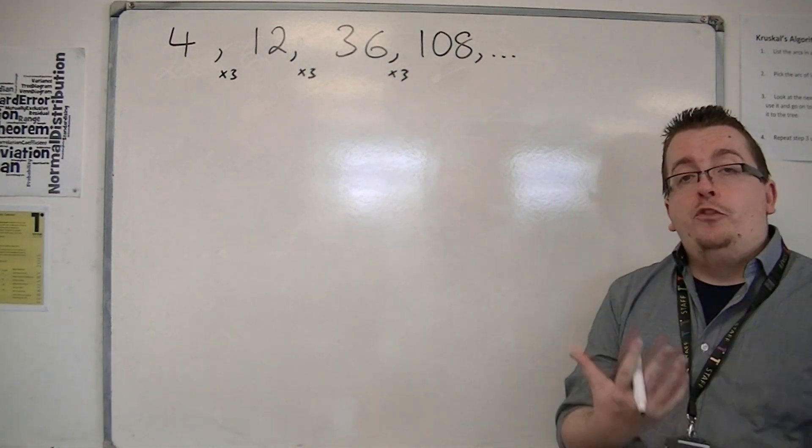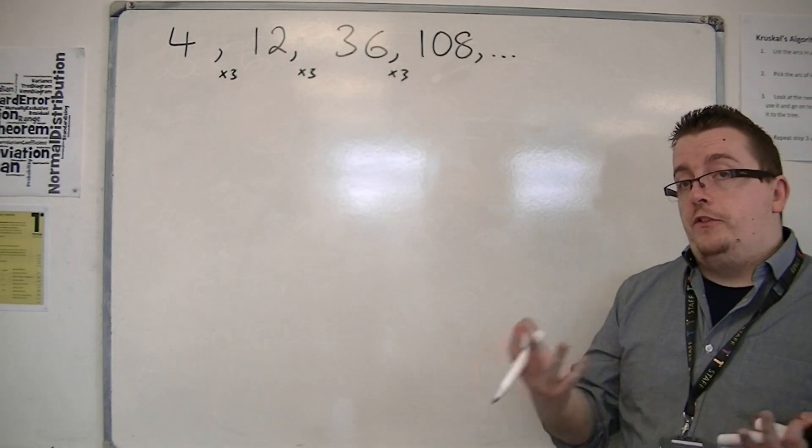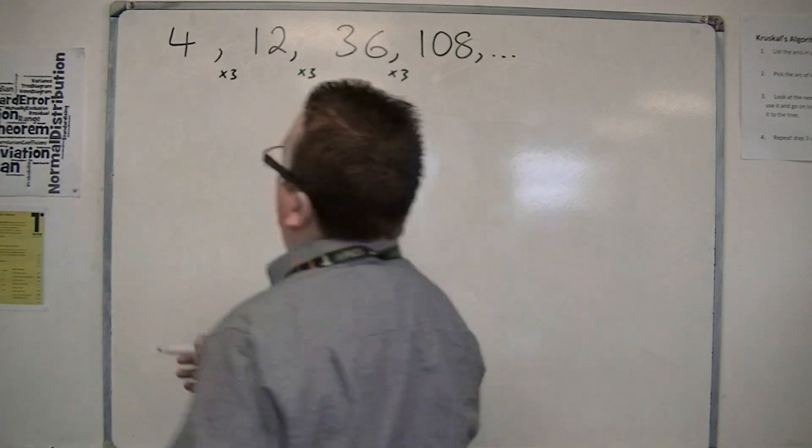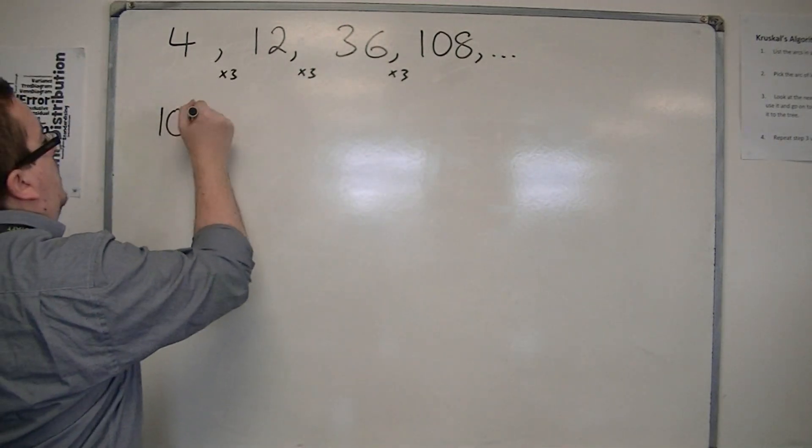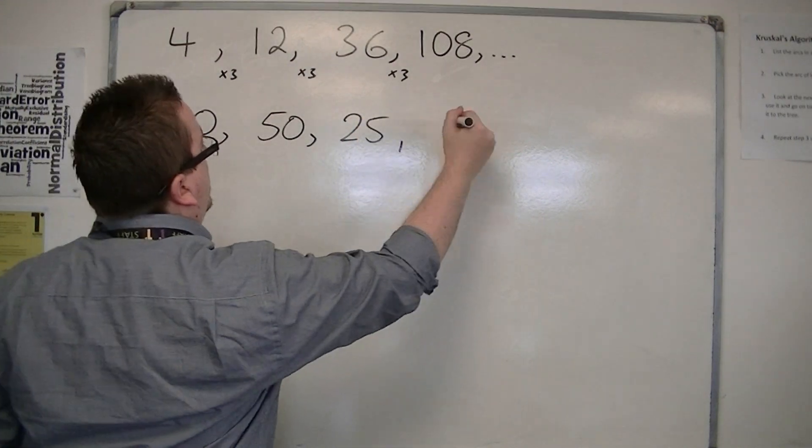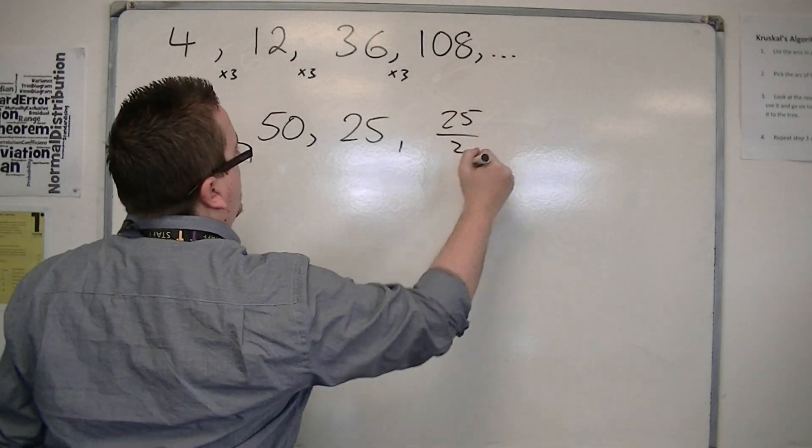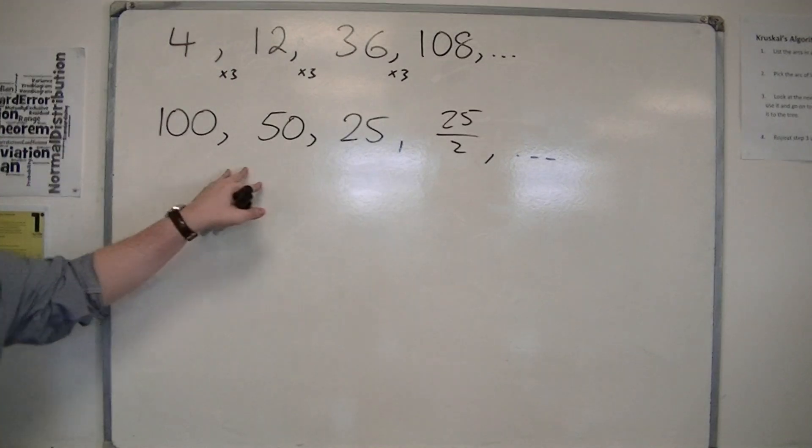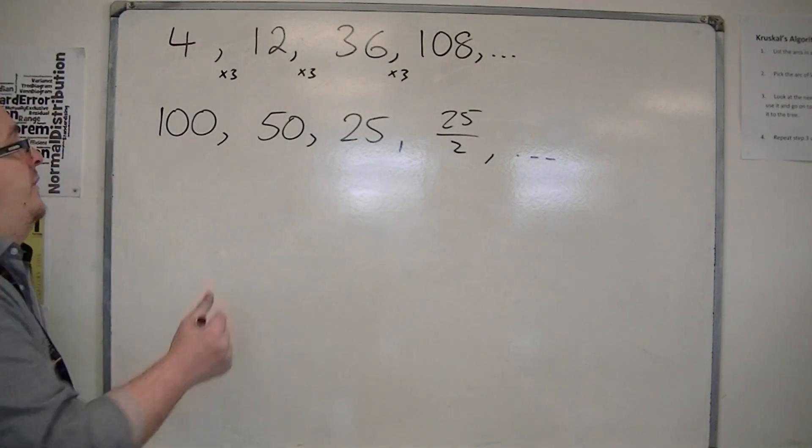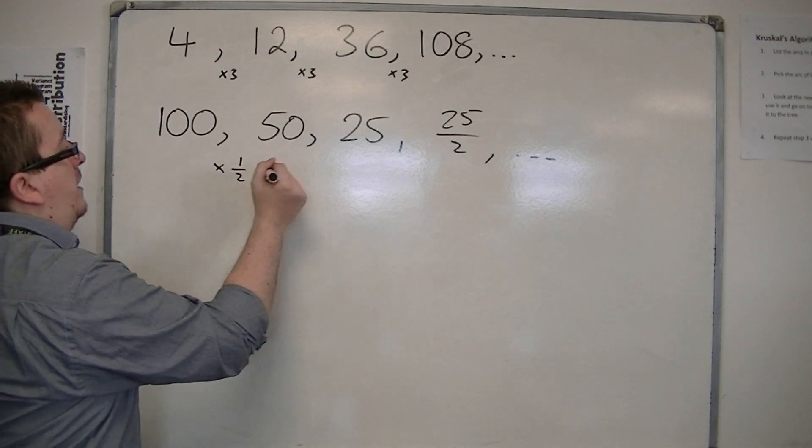So multiplying can also be seen as dividing. So I could be having a sequence that looks like this, for example: 100, 50, 25, 25 over 2, etc. So each time I'm dividing by 2, this is still a geometric sequence because each time I'm multiplying by a half.